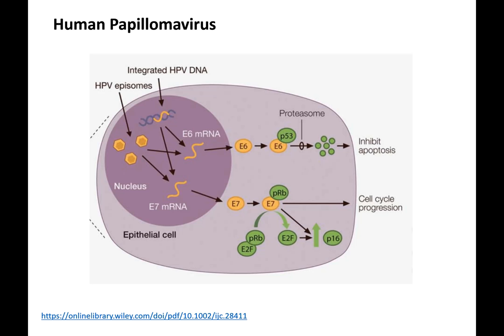The two proteins we're most interested in are E6 and E7. These early proteins are essential for virus survival and they are also the transforming proteins — meaning they lead to cancer.